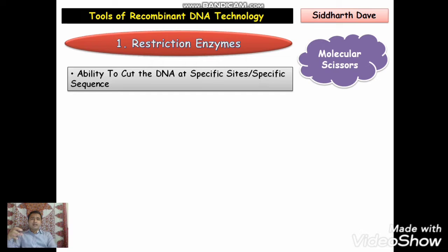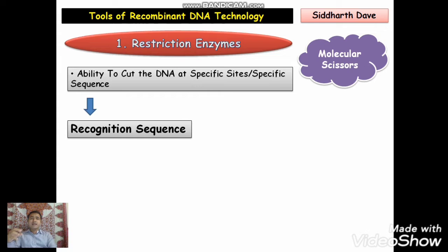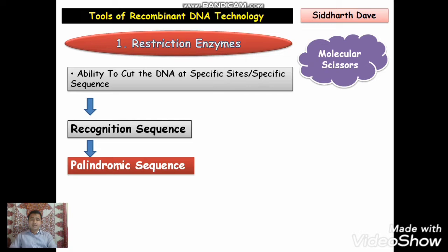As we know that restriction enzymes make a cut at a specific sequence on a DNA, so this sequence is called the recognition sequence — this is the sequence where the enzyme makes a cut. This specific sequence is called the palindromic sequence.